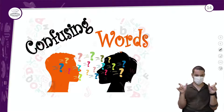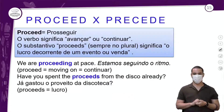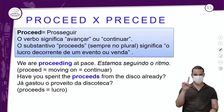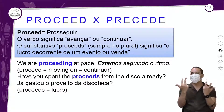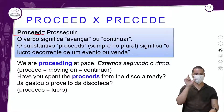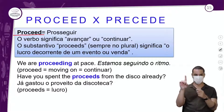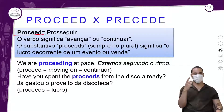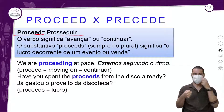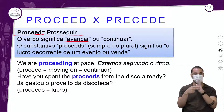Chegou a hora das nossas confusing words — palavras confusas. Nós temos as palavras 'proceed' e 'precede'. Proceed, proceed. A palavra proceed se escreve P-R-O-C-E-E-D, com dois Es. Ela significa o que você pode ter pensado: 'prosseguir'. É um verbo que significa avançar ou continuar.